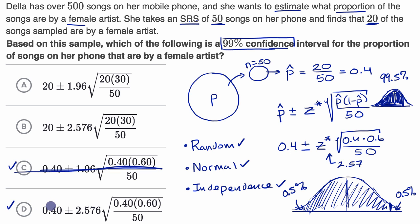Let's remind ourselves what this actually means. That means that if we were to repeatedly take samples of size 50 and repeatedly use this technique to construct confidence intervals, roughly 99% of those intervals constructed this way are going to contain our true population parameter.